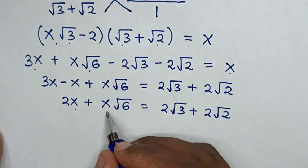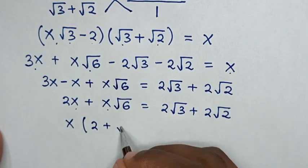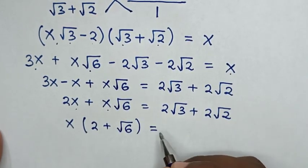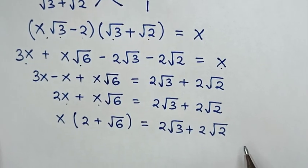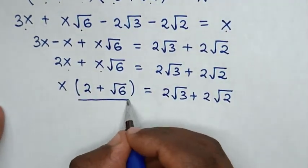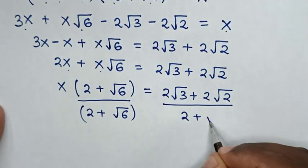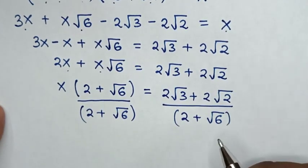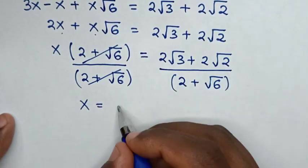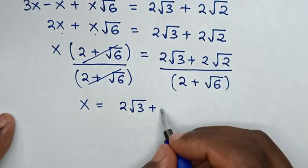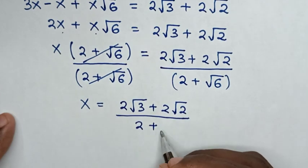Then in the next step, x is common, so we take x out of the bracket: x times (2 plus square root of 6) equals 2 square root of 3 plus 2 square root of 2. Then in the next step, we divide both sides by (2 plus square root of 6). This and this will cancel, so x is equal to (2 square root of 3 plus 2 square root of 2) over (2 plus square root of 6).